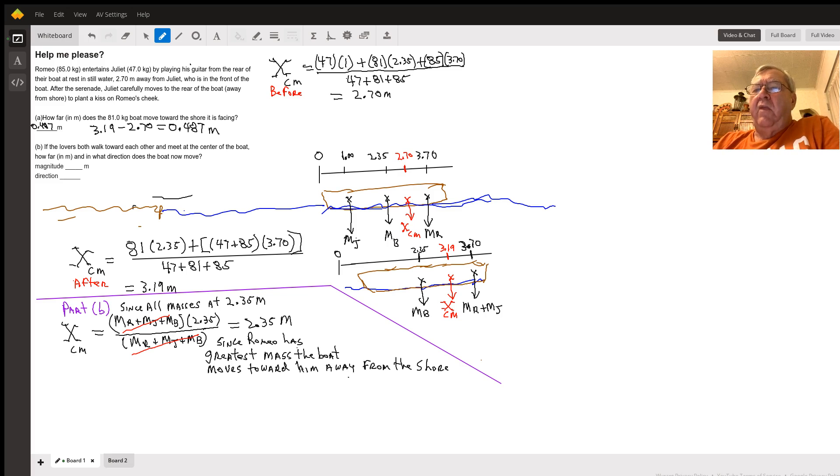...are collected together right in the center of the boat, which is 2.35 meters from our reference point. This means the center of mass, because that's where all the mass is, is going to be 2.35 meters from our reference point. Since Romeo has the greatest mass, the boat moves towards him and away from the shore.